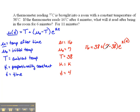Now solving this, if I move the 38 over to the other side, we get negative 22 equals, subtracting the parentheses, that would be negative 31 e to the 4K power. Now if I divide both sides by negative 31, we get 22 over 31 equals e to the 4K power.